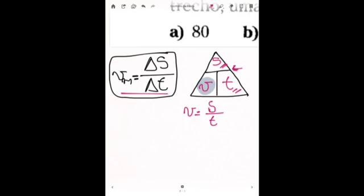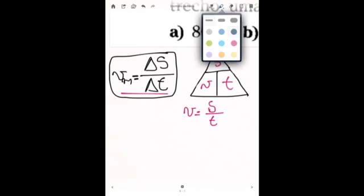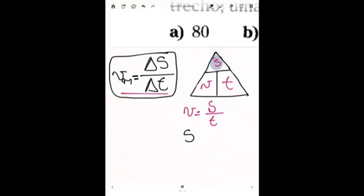Se eu quiser, por exemplo, calcular espaço, o que é que eu vou fazer? Vou cobrir o espaço, que é o que ele está me perguntando, e vou escrever aqui, espaço é igual a V que está lateral ao T. Então, eu vou interpretar que é V vezes T. Espaço é a velocidade vezes o tempo.